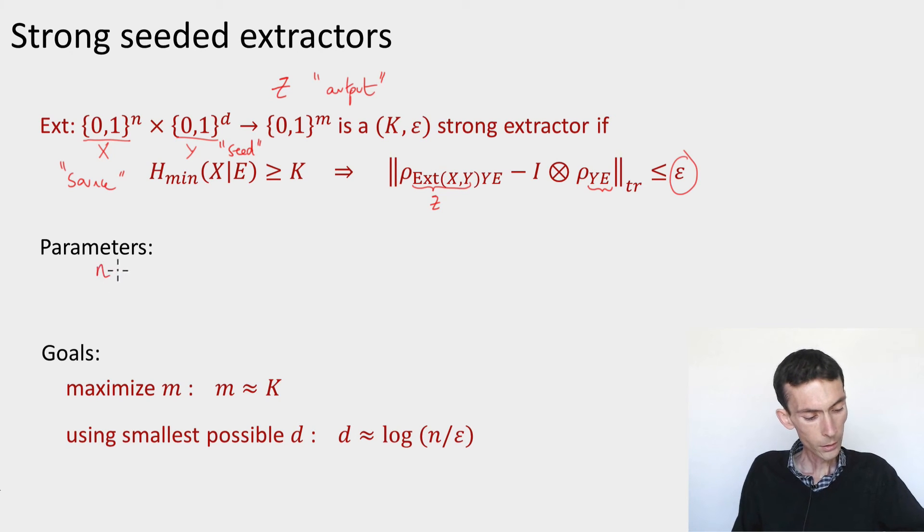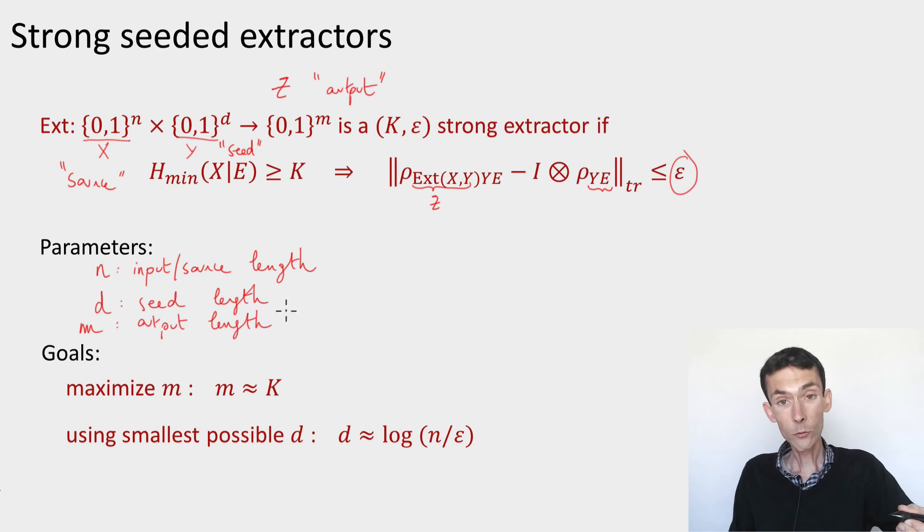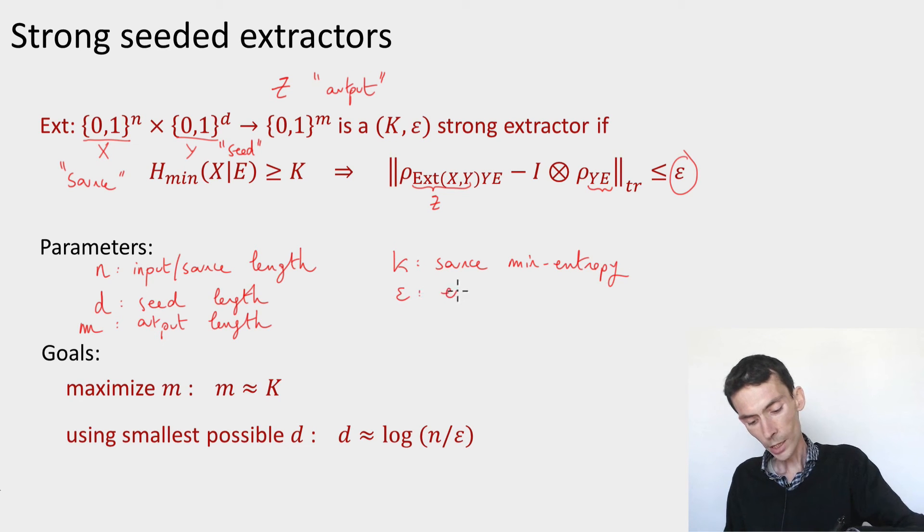So there's a lot of parameters to play with here. You have n, which is the input length or the source length. You have d, which is the seed length. You have m, which is the output length. And then you have two more. You have K, which is the input or source entropy, and epsilon, which is called the error.